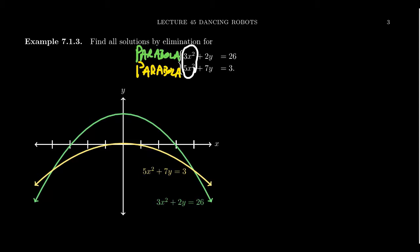I can do that by adjusting coefficients. If I multiply the first equation by 5, I get 15x² + 10y = 130.